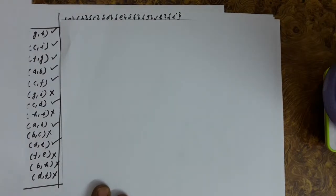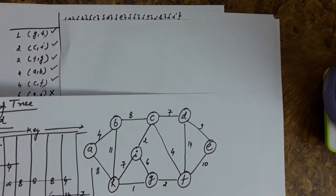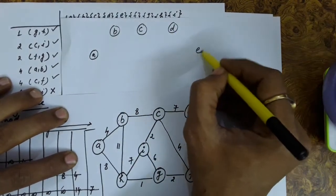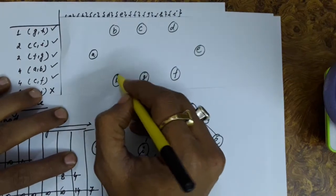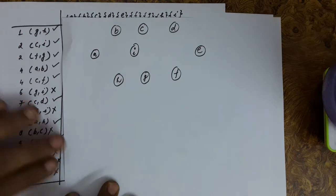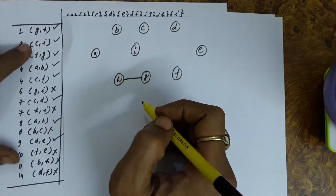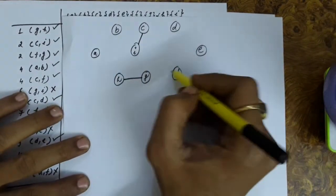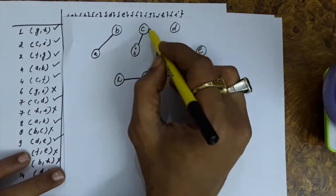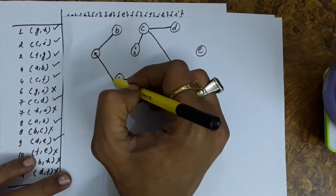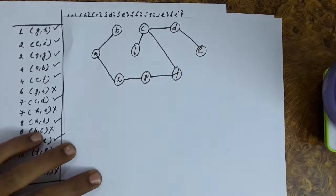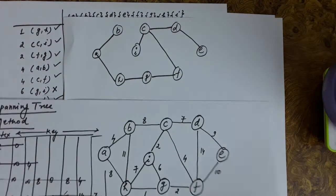Looking at the original graph and drawing only the selected edges: GH, CI, FG, AB, CF, CD, AH, and DE are the selected edges. Marking the costs of these edges gives us the minimal spanning tree. This result can be verified against Prim's algorithm, which found the same minimal spanning tree.